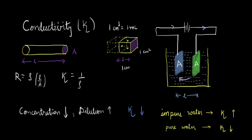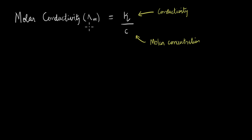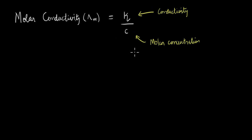Now let's look at the relationship between molar conductivity and concentration. Molar conductivity, denoted by lambda_m, is defined as conductivity kappa divided by the molar concentration (molarity). You can think of molar conductivity as conductivity on a per-mole basis. Looking at this relation, since concentration is in the denominator, it might seem that molar conductivity and concentration are inversely related — so decreasing concentration would increase molar conductivity. Is that correct?